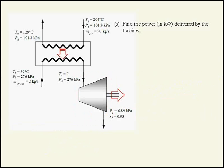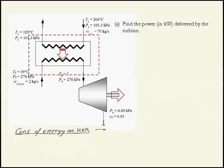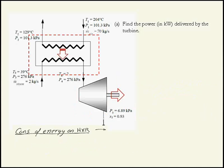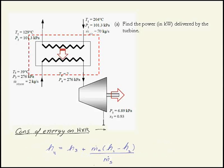To find state point 4, we look at conservation of energy for only the heat exchanger itself. For steady state with no heat transfer across the heat exchanger boundary, it is simply a balance between mass flow rates and enthalpies. We solve that for H4. We know H3 because we have two properties at that point given the mass flow rate, but we have to deal with the enthalpy drop of the air across the heat exchanger.